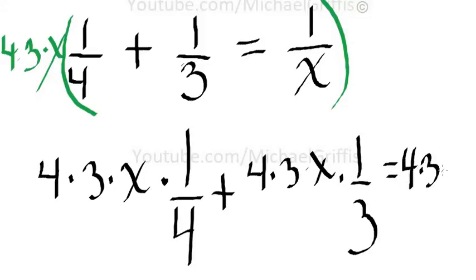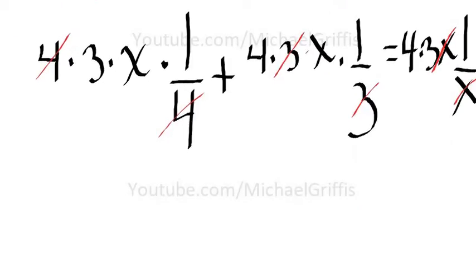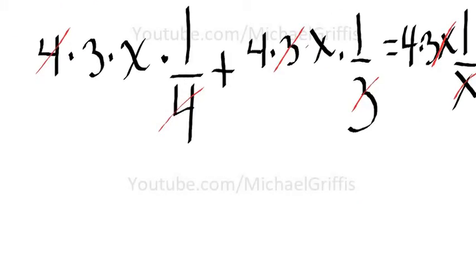So you can see what's going on here. The four is going to cancel out, so you see that gets rid of that fraction there. And then the threes cancel out here, and then the x's cancel out lastly. And so now we're going to clean this thing up.